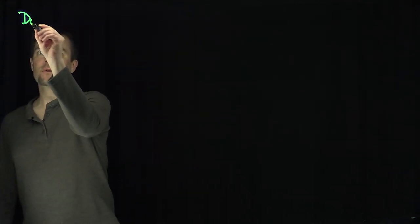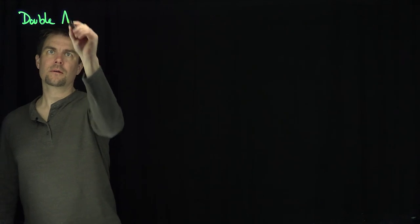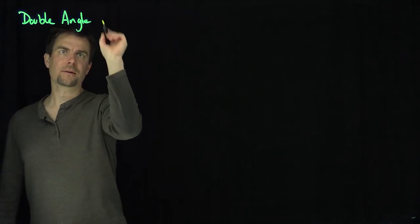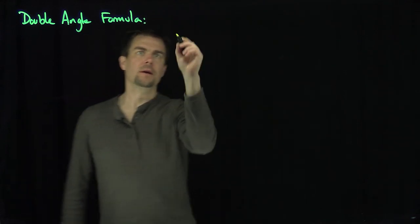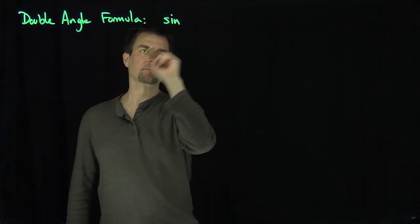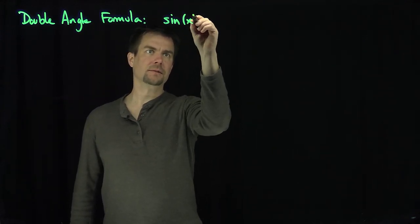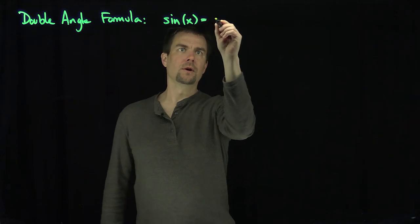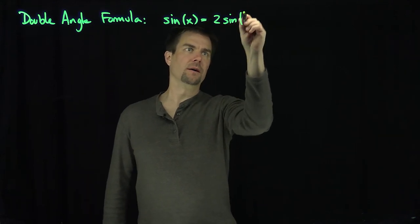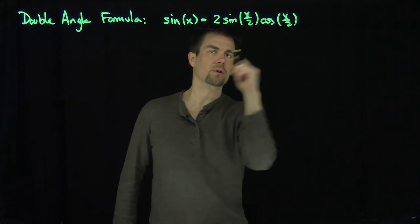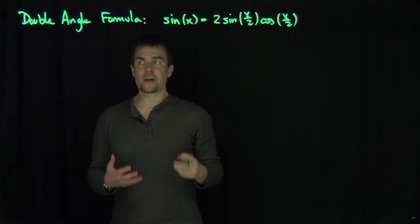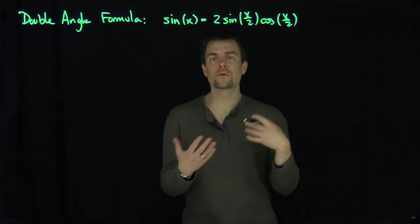Hello students. In this video we'll derive an infinite product expansion for pi. Let's use the double angle formula over and over again. Our double angle formula for sine is: the sine of x equals 2 times the sine of x over 2 times the cosine of x over 2. That's the double angle formula, and I'm going to use this formula repeatedly.